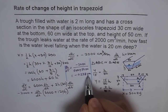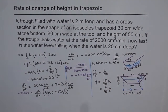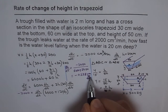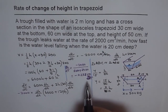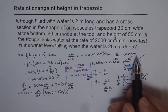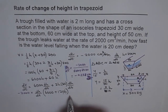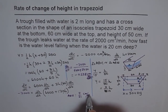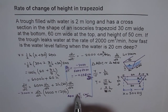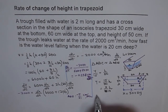The minus sign indicates that the water level is falling at the rate of 0.238 centimeters per minute when the height is 20 centimeters. The answer is best written as minus 5/21 centimeters per minute. The minus sign indicates the water level is falling.